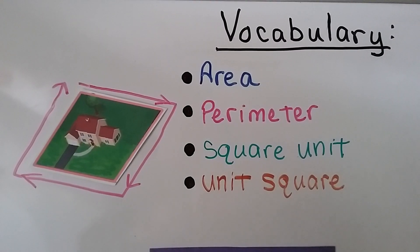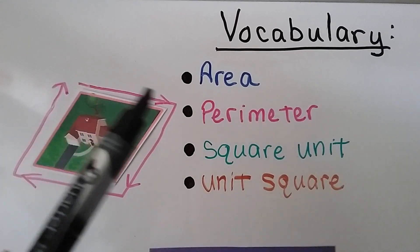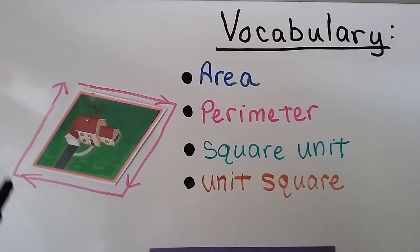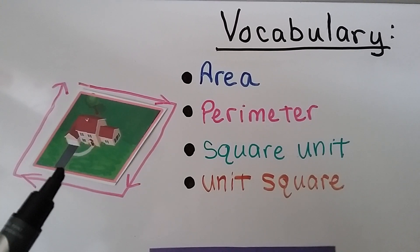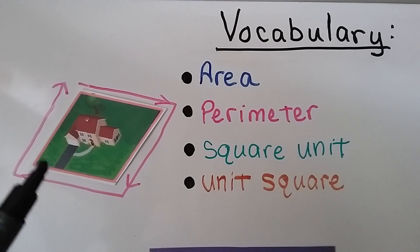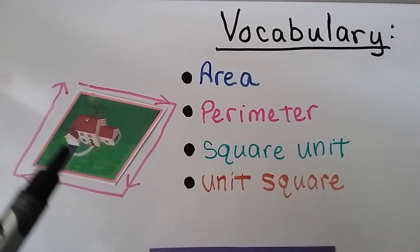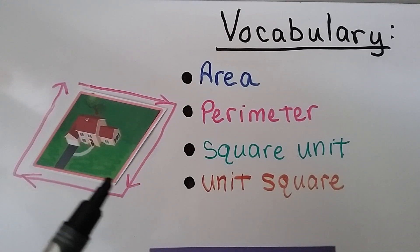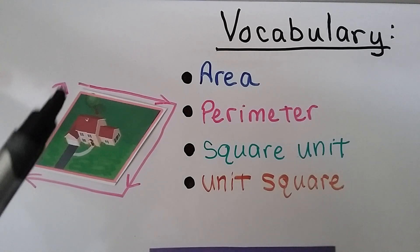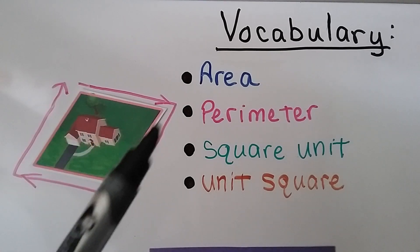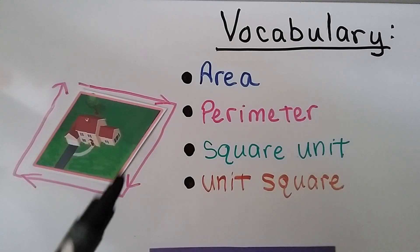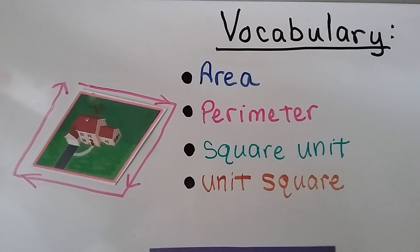Remember, perimeter is the measure of the outside of something. If we wanted to find the perimeter of a person's yard, we would measure around the outside — almost like that's where we would put a fence. That is the perimeter.